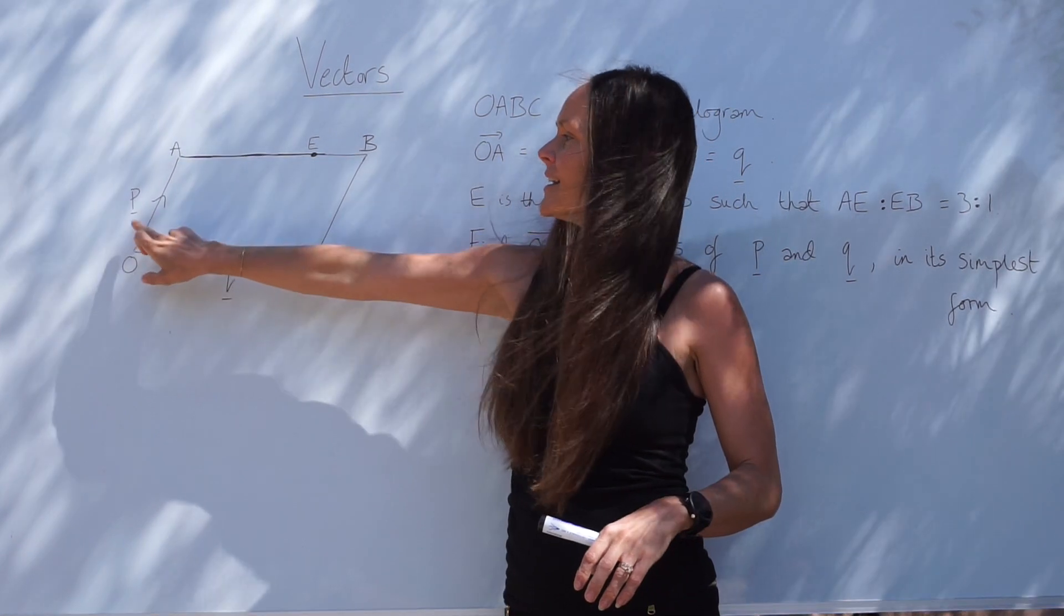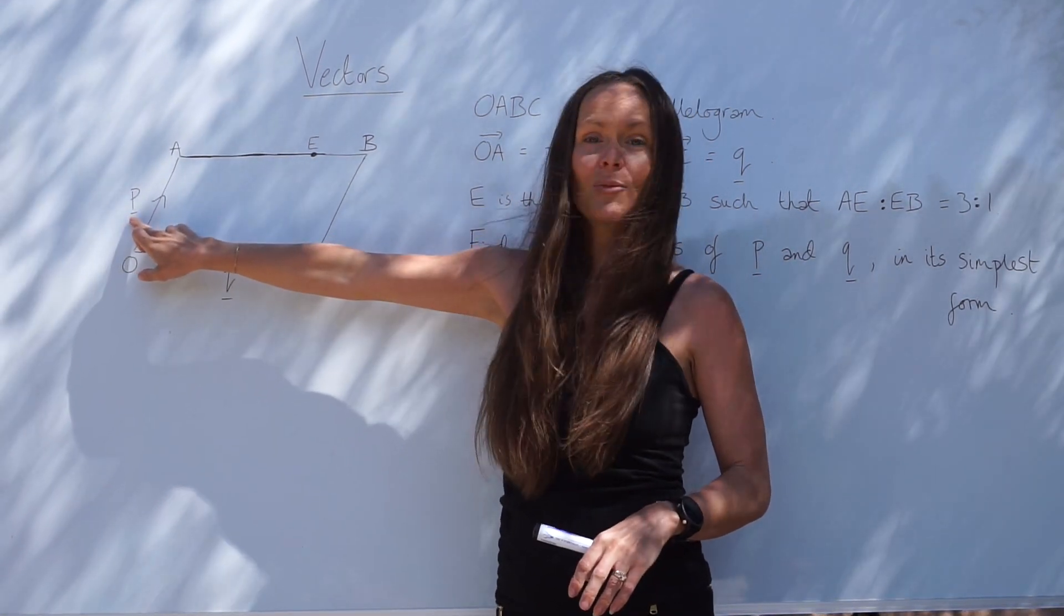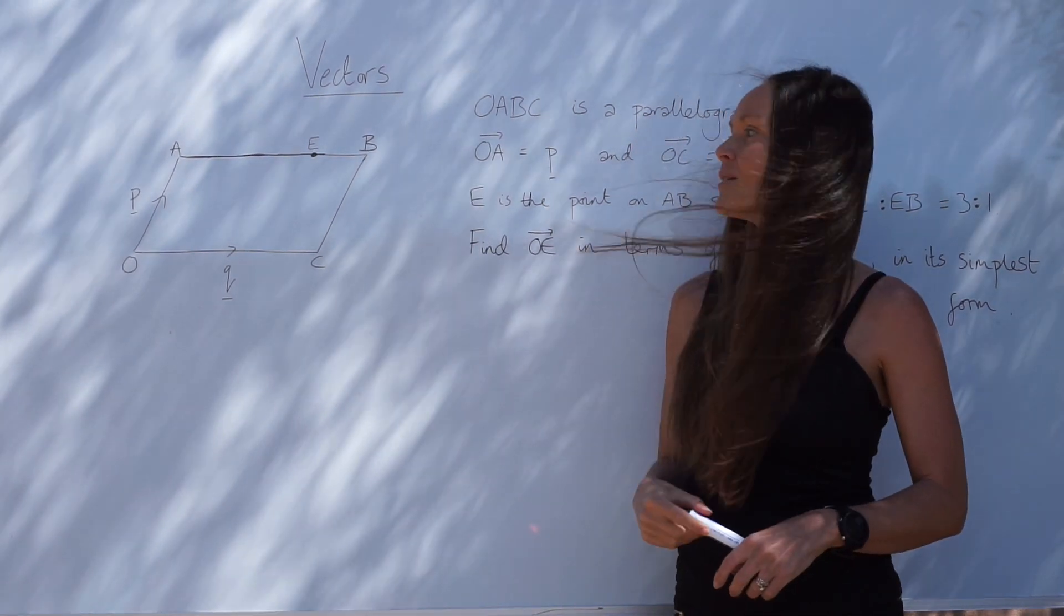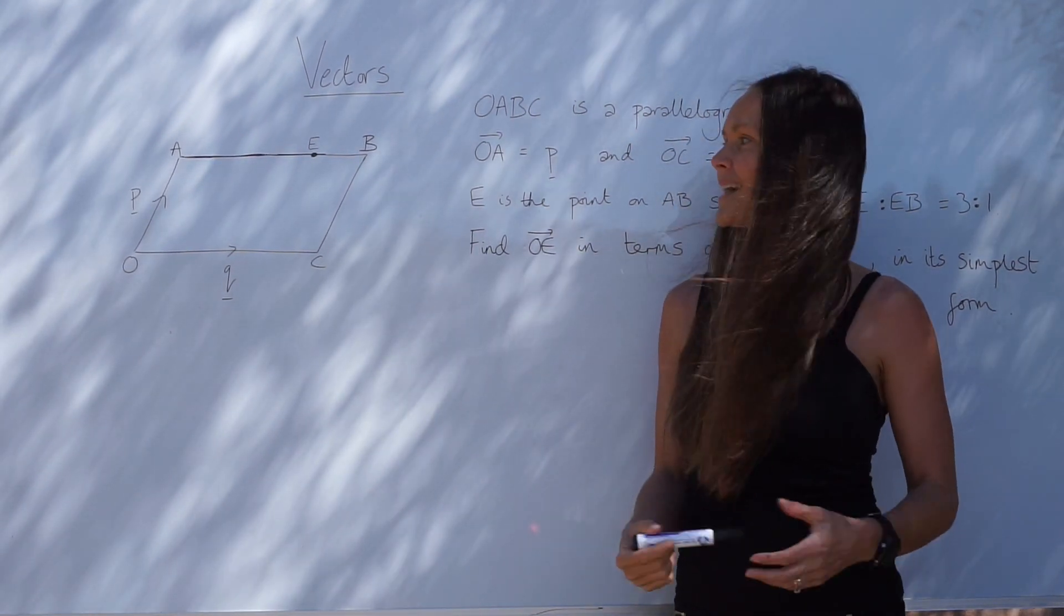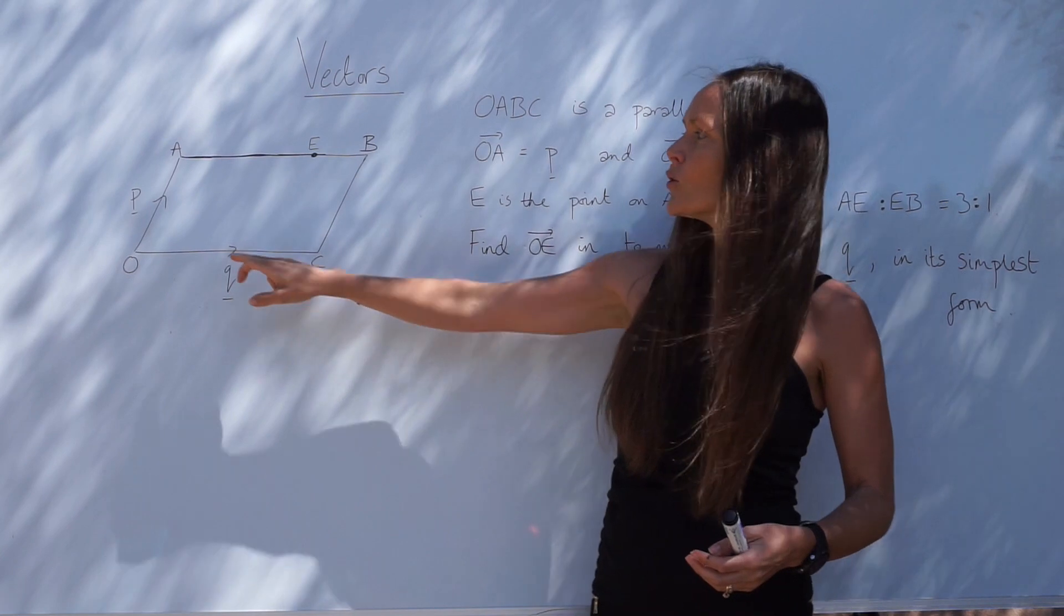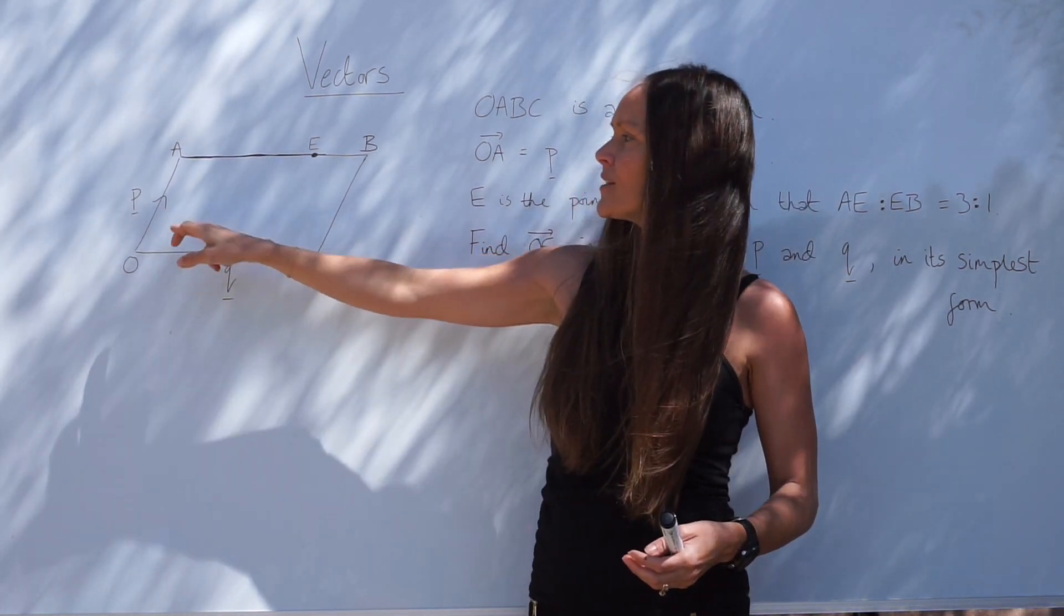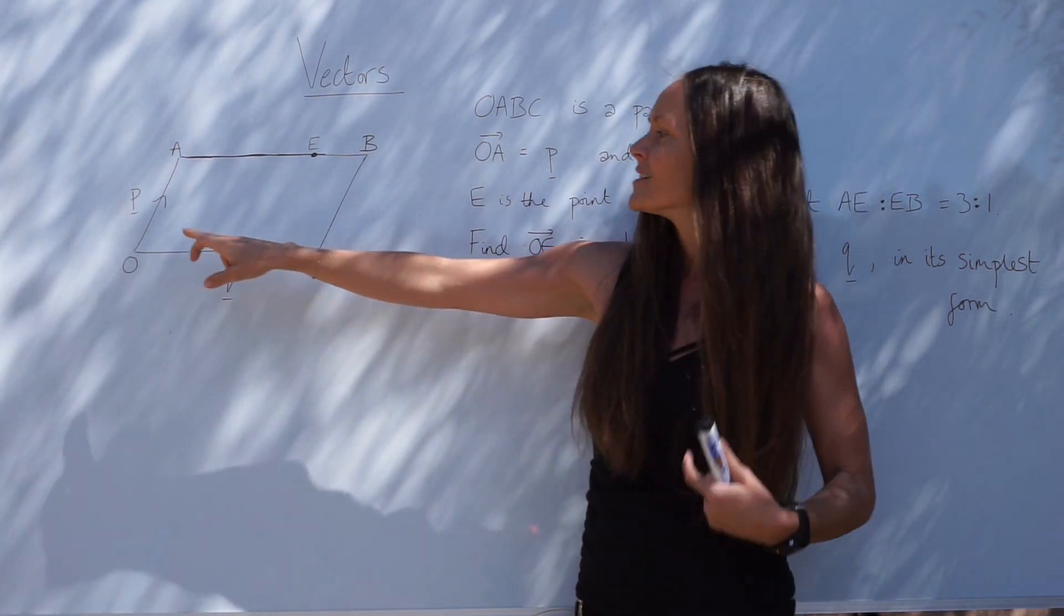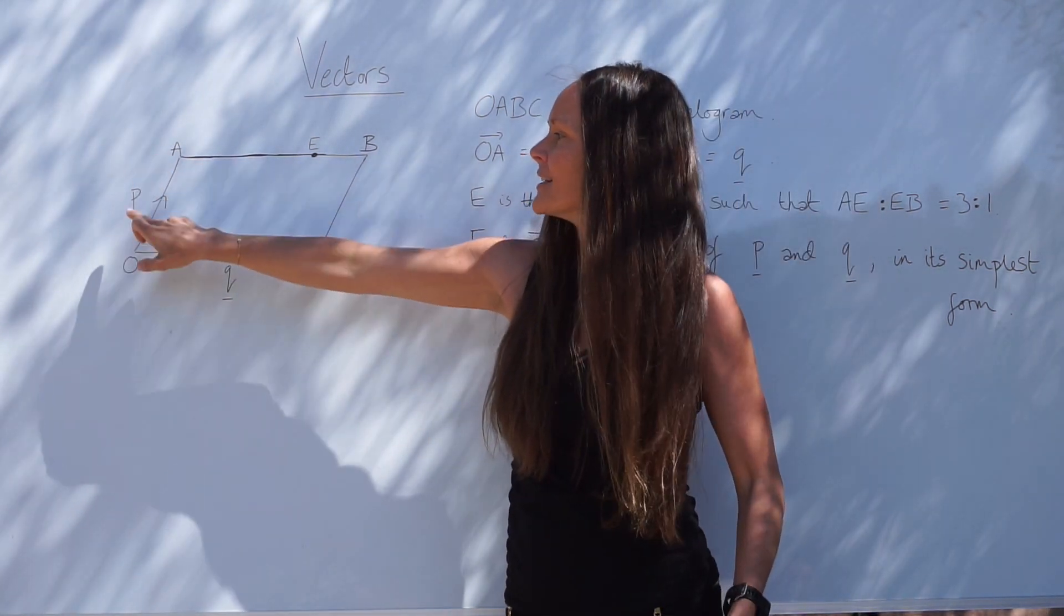So O to A is labelled as vector P. Notice how I've underlined it when I've written it down, that's just to show that it's a bold letter, it's a vector. There's also an arrow associated with the vector, so the direction is important. The direction from O to A is vector P.